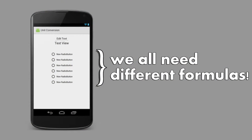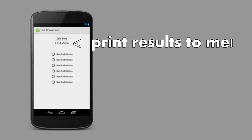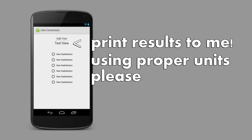To be clear, we'll need to use a different formula for each possible radio button that the user might select. Once we have the value that the user wants, we should print it to the screen in the text view. A nice touch would be to add the proper units to the end too. For instance, if the result is 4C, that's what should be printed on the screen.